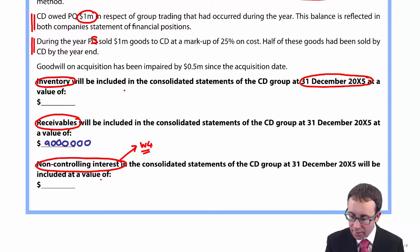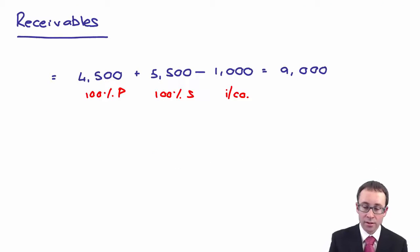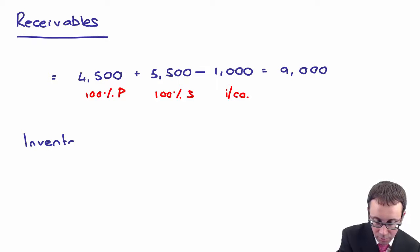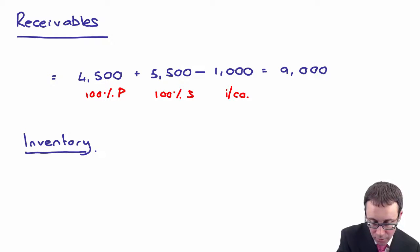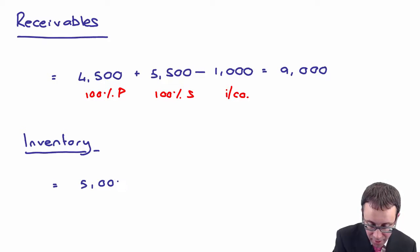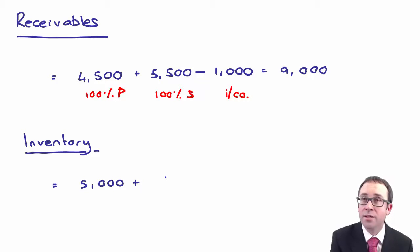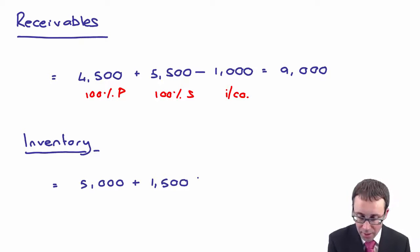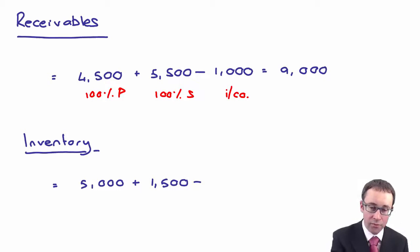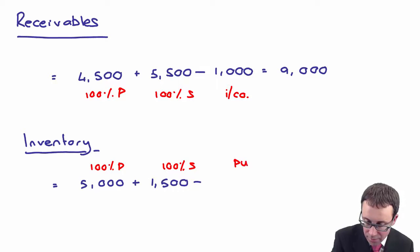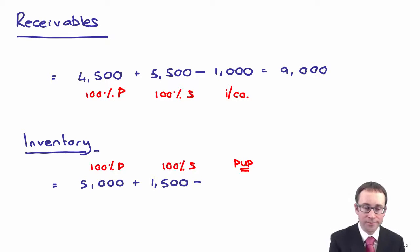It then wants us to work out a figure for inventory. Working out inventory is very similar to how we worked out receivables. We take 100% of the parent, which is 5,000, we add on 100% of the subsidiary, which is 1,500, and then we need to adjust for the provision for unrealised profits — the PUP adjustment.